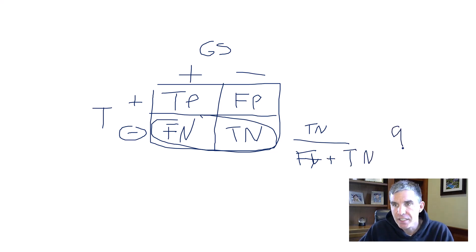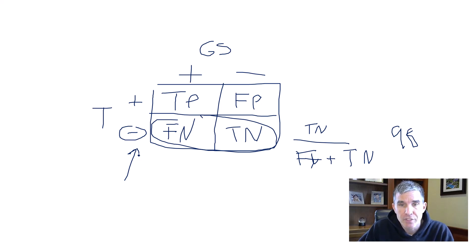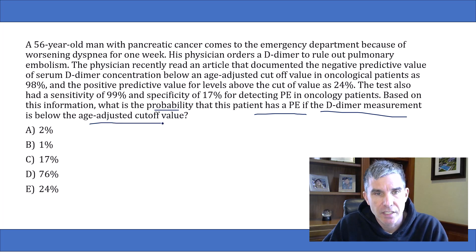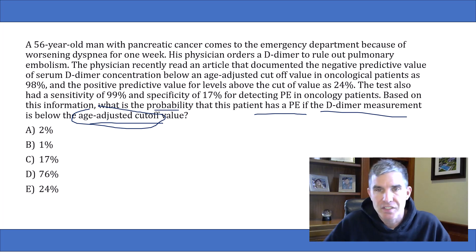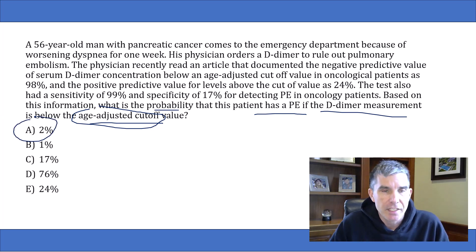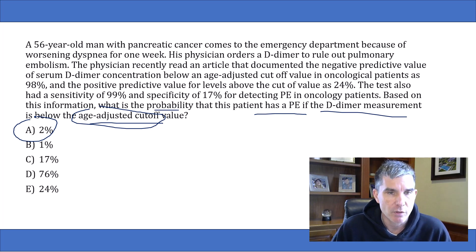They tell us the NPV is 98%, meaning of all the people who test negative, 98% are truly negative for PE. But that's not what they want. They ask: of all the people who test negative, what percent actually do have PE? So that's going to be 100 minus 98, or 2%. The probability that this patient has a PE if the D-dimer is below the age-adjusted cutoff value — which is just saying if they screen negative — is 2%.